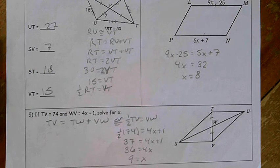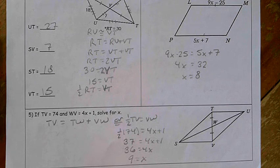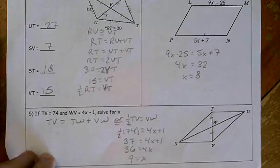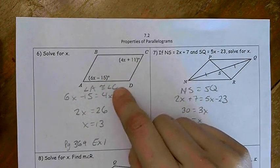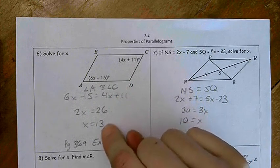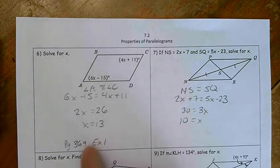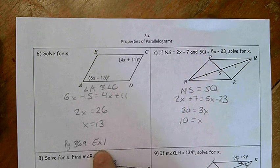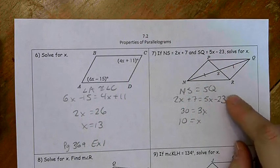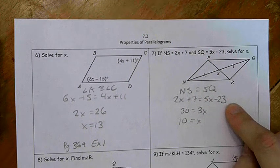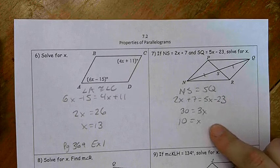We're going to take a look at the back side. So go ahead and pause, try those problems on the back, and we will go over those in just a second. Pause the video, try them for yourselves on the back. For number 6, these are opposite angles, so they are congruent to each other. I've got my setup, I plug them in, and you should get X equals 13. That's the same as example 1 on page 369. For number 7, NS is congruent to SQ. They are equal. So you have 2X plus 7 equals 5X minus 23, and you get X of 10.